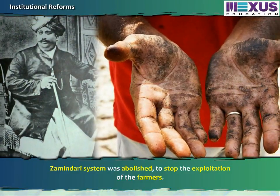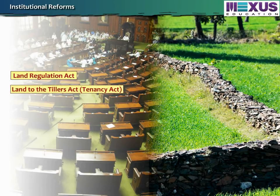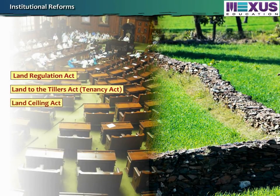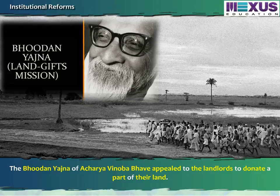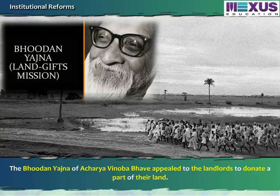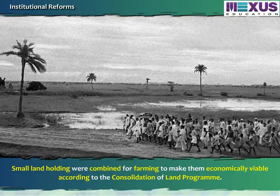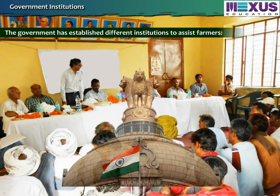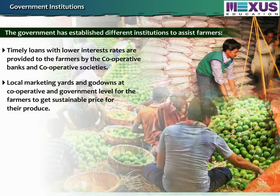Various institutional reforms have been made by the government in the agriculture sector. The Zamindari system was abolished to stop the exploitation of farmers. Legislative acts like the Land Regulation Act, Land to the Tillers Act, Tenancy Act and Land Sealing Act have benefited the farmers in different ways. The Bhu Daan Yagya of Acharya Vinoba Bhave appealed to landlords to donate a part of their land. Small land holdings were combined for farming to make them economically viable according to the Consolidation of Land Programme.